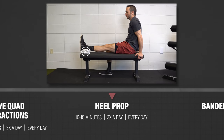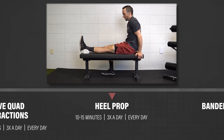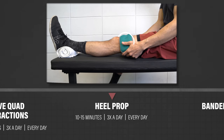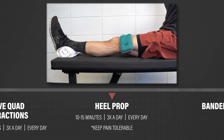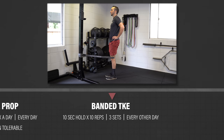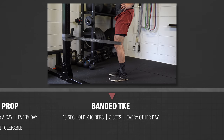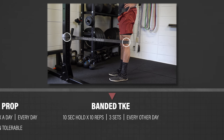Another option is propping your heel up on an elevated surface for 10 to 15 minutes, three times a day. If you need to enhance the stretch, you can add a weight just above your knee. The goal here is low load, long duration — so while it may feel slightly uncomfortable, it should not be unbearable. And finally, once you gain more range of motion, strength, and control, add in a banded TKE: place a band behind the back of your knee, anchor to an object, and perform the same quad contractions against resistance.